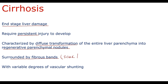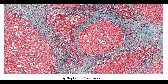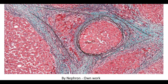Fibrous bands are scar tissue produced to limit inflammatory damage by encircling hepatocytes from areas of inflammation in liver tissue. In this picture, we can see liver fibrous bands that encircle hepatocytes, and this results in the formation of a regenerative parenchymal nodule.